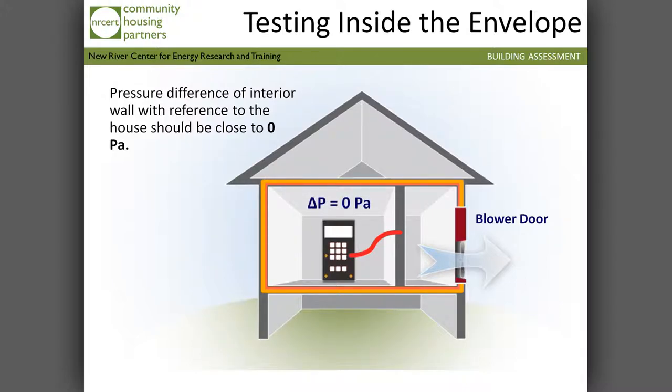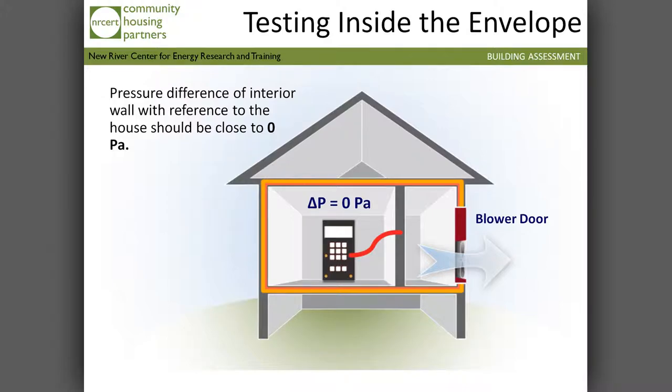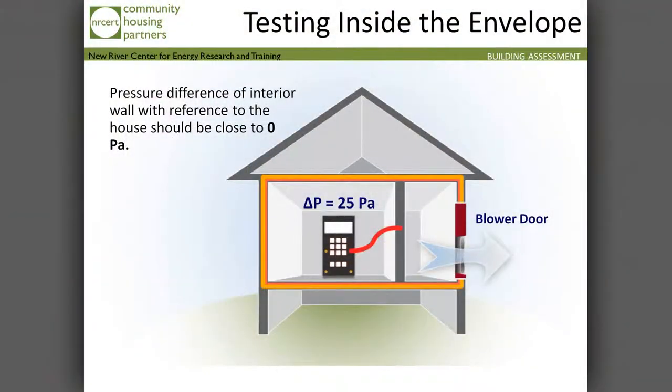When we're testing inside the envelope, we should see zero. If this is a complete thermal and pressure boundary — no holes in the top plate, electrical and plumbing penetrations have been sealed — then we should see zero or close to it. When you get below five, you're doing pretty well. You don't want to focus a lot of attention on really small numbers; look for the larger numbers initially.